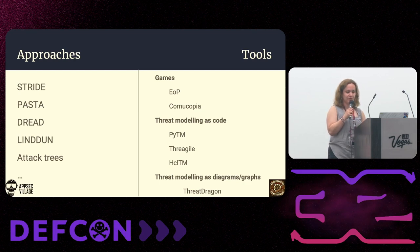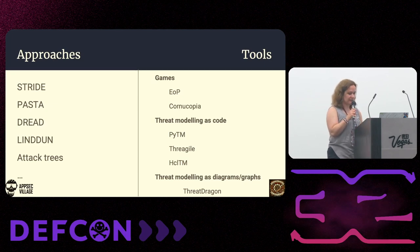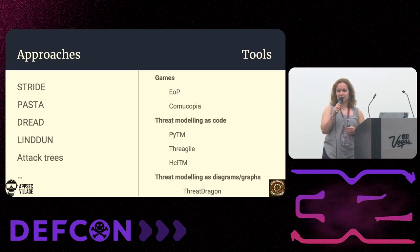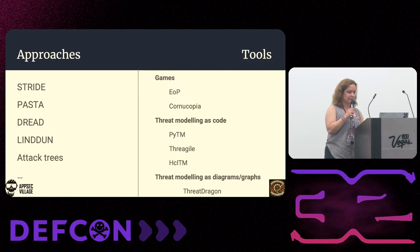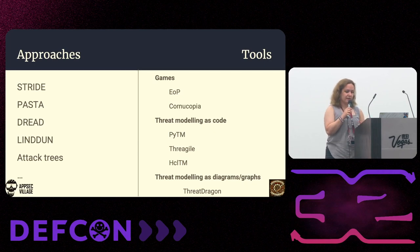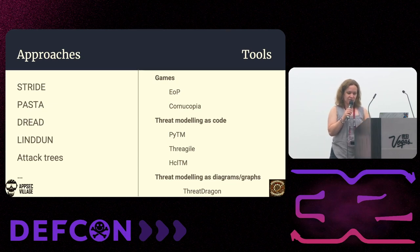STRIDE stands for spoofing, tampering, repudiation, information disclosure, denial of service, and elevation of privilege. You have PASTA — not food — but the Process for Attack Simulation and Threat Analysis. LINDDUN, which is for identifying and mitigating privacy threats. And then when it comes to tools, you have games. Threat Modeling is Code, which looks at Terraform, and Threat Dragon, which is another open source project. The two games out now are Elevation of Privilege and Cornucopia — and later we're going to talk about Cornucopia a little bit more.